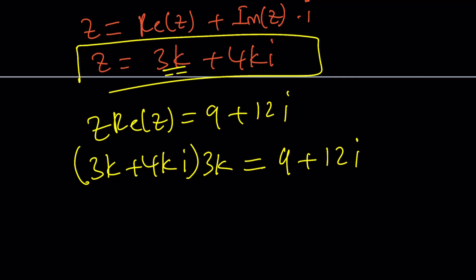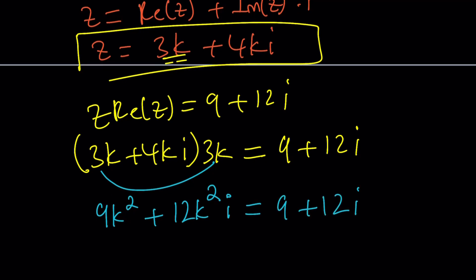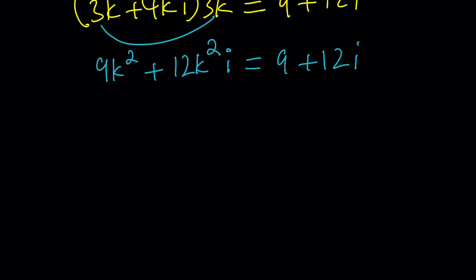Let's go ahead and distribute. We get 9k squared plus 12k squared i equals 9 plus 12i. Isn't that kind of obvious what k is going to be? Well, let's still solve for k. So setting the real parts equal 9k squared equals 9. That gives us k squared equals 1. And setting the imaginary parts equal gives us 12k squared equals 12.